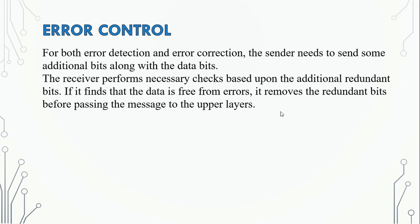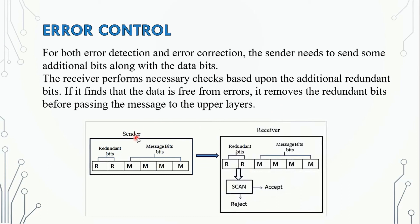The receiver can apply a few steps to check the message using the redundant bits. If there is no problem, the data is accepted and passed to the next layer. If an error is found, the receiver rejects it and the message is not passed forward.